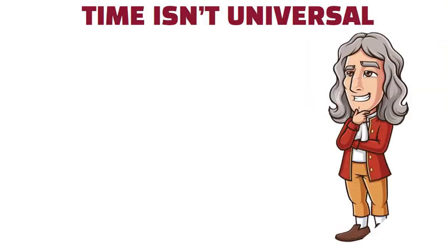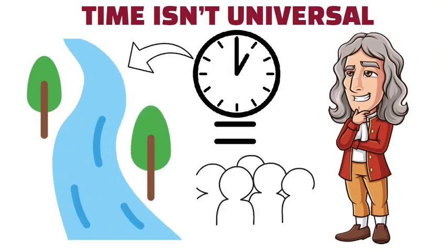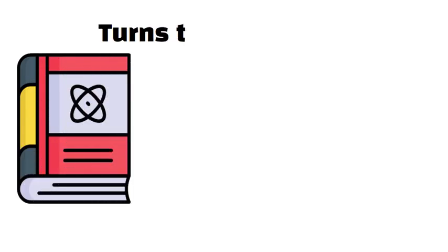Time isn't universal. Isaac Newton once imagined time as a universal river flowing at the same rate for everyone. Modern physics turns that idea on its head.